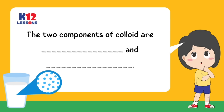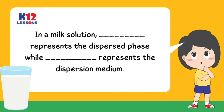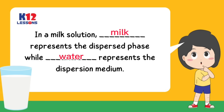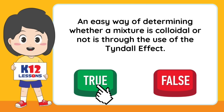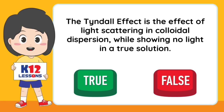The two components of a colloid are the dispersed phase and the dispersal medium. In a milk solution, milk represents the dispersed phase while water represents the dispersion medium. An easy way of determining whether a mixture is colloidal or not is through the use of the Tyndall effect. The Tyndall effect is the effect of light scattering in colloidal dispersion while showing no light scattering in a true solution.